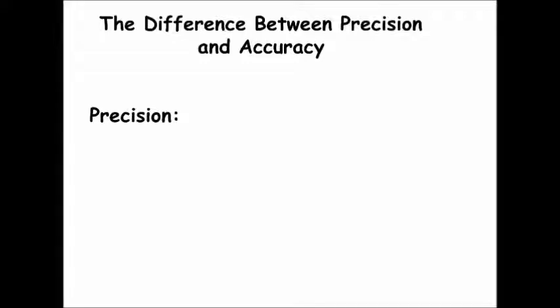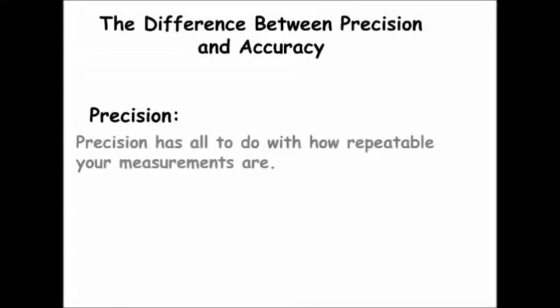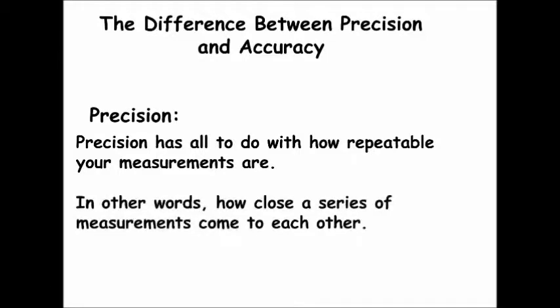Precision, by definition, has all to do with how repeatable your measurements are — in other words, how close a series of measurements come to each other. So if you and five other students measured the length of a piece of string and all came up with exactly the same measurement to the hundredth place, you would be precise. Now whether or not you're accurate, that has to do with something else.